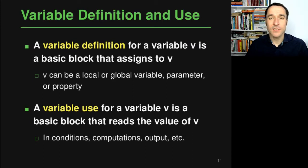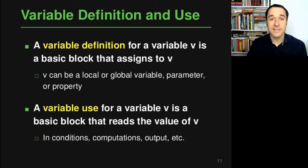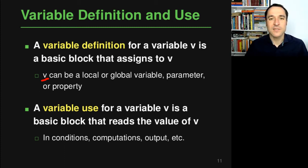Let's look in more detail at data flow dependencies. First we need to define what variable definitions and variable uses are. Given a program represented as a control flow graph where nodes are basic blocks, a variable definition for a variable v is a basic block that assigns something to v. Here v can be a local or global variable, a function parameter, or a field property in an object-oriented language.